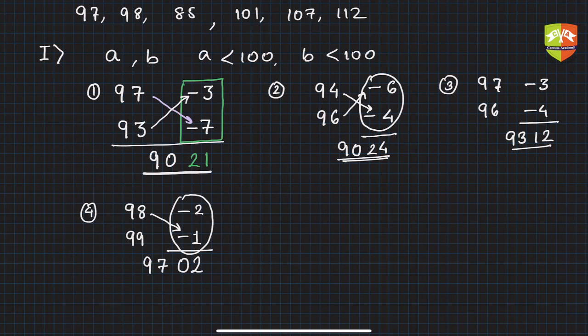You can take another example. Let's say you have 98 and 97 now. So how far? Minus 2. How far? Minus 3. So if you product it, minus 2 into minus 3 is plus 6, but you have to write 06. And then 98 minus 3, 95. So this is the product.